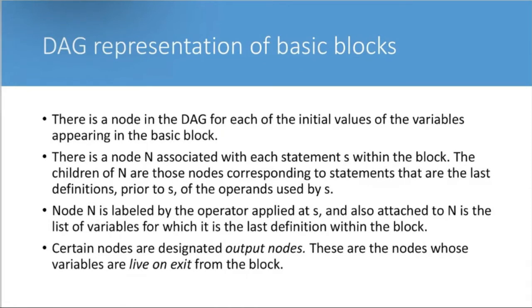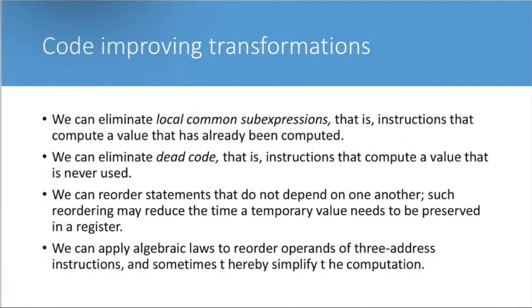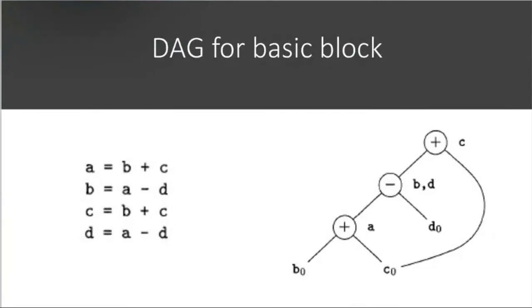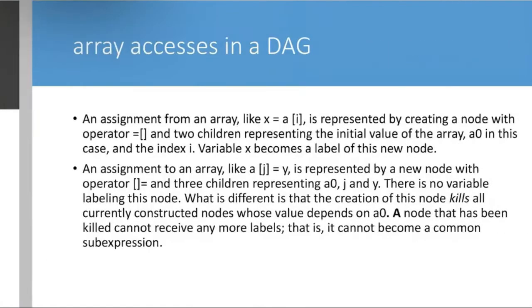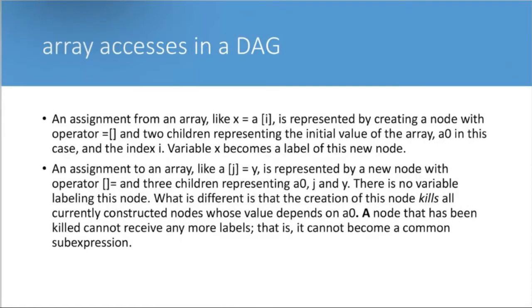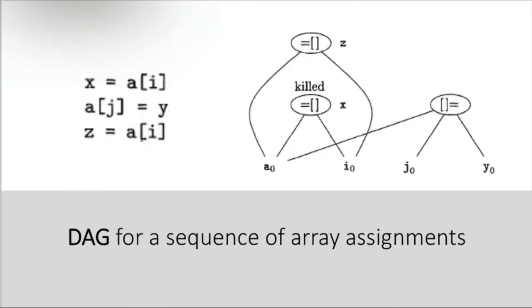DAG representation of basic blocks: the same process applies. Array access in a DAG: if there is an array, like x = a[i], it is accessing the i-th element of a, and it can be represented in the form of a DAG node.